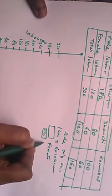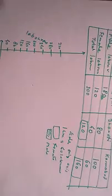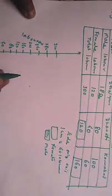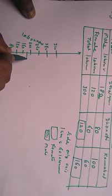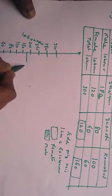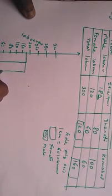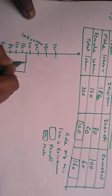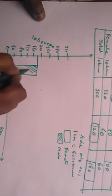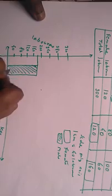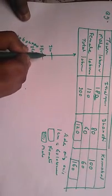For Ithalapur, the male labourers are 180 — we mark that on the bar. Female labour is 120, making the total 300.